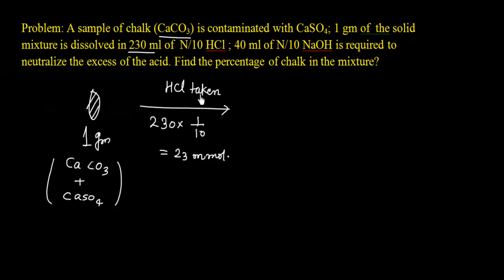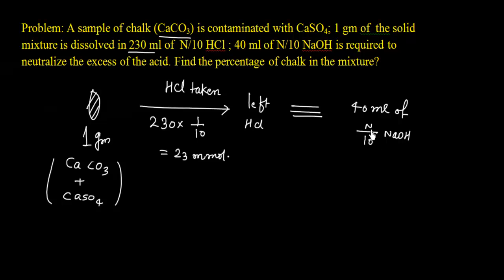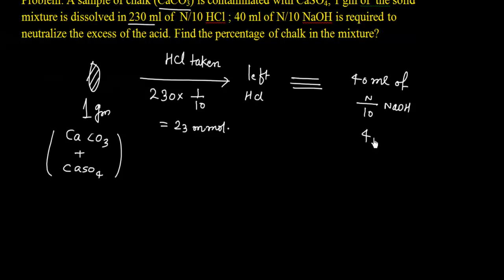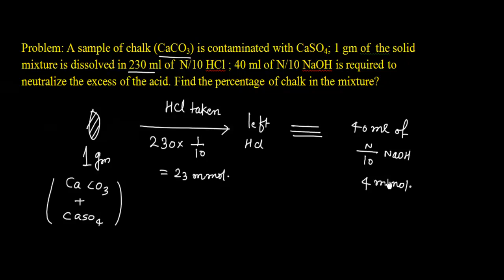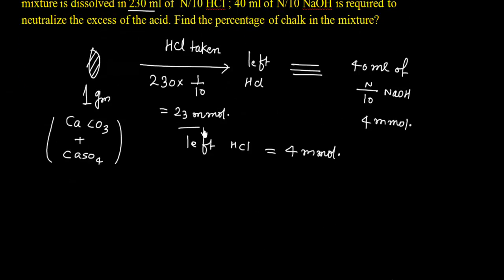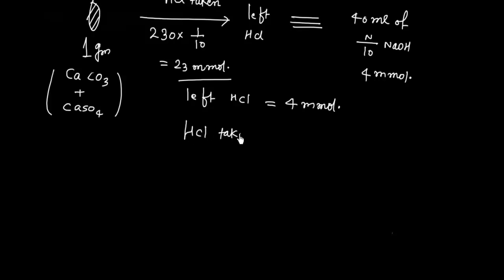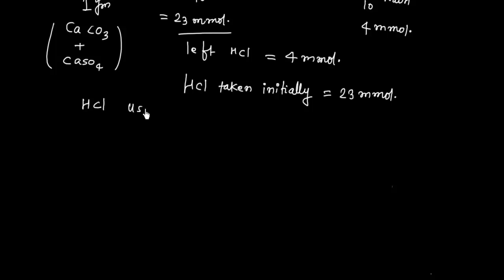This HCl is not all neutralized, so some HCl is left. The leftover HCl is neutralized by 40 ml of N/10 NaOH. So moles of NaOH used = 40 × (1/10) = 4 millimoles. Left acid equals 4 millimoles. HCl initially taken was 23 millimoles, so HCl used = 23 minus 4 = 19 millimoles.